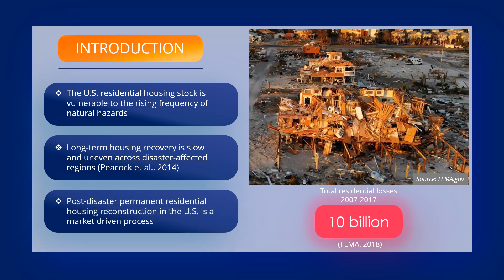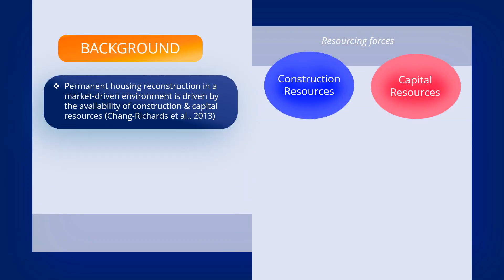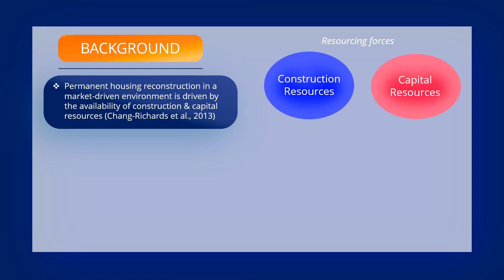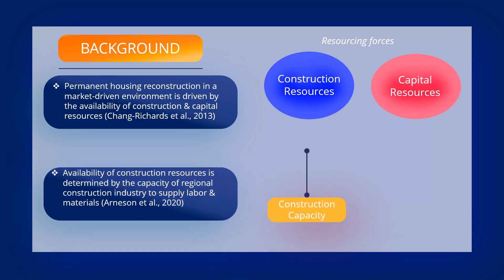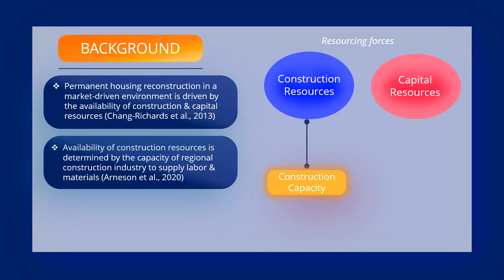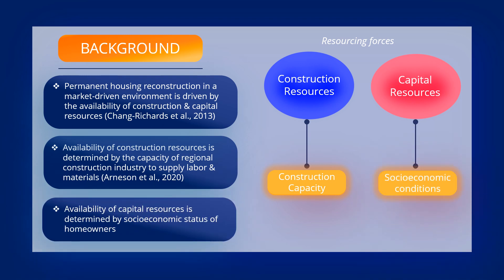Post-disaster housing reconstruction in the U.S. is a market-driven process where homeowners carry out repairs or reconstruction of the damaged houses using their personal capital and construction resources. In a market-driven environment, the construction and capital resources are the two core resourcing forces that drive the permanent housing reconstruction. The heightened demand for reconstruction must be met by the supply of labor and materials from the regional construction industry supply chains. On the other hand, the socioeconomic status of households acts like a catalyst that either favors or constrains homeowners from acquiring capital resources.